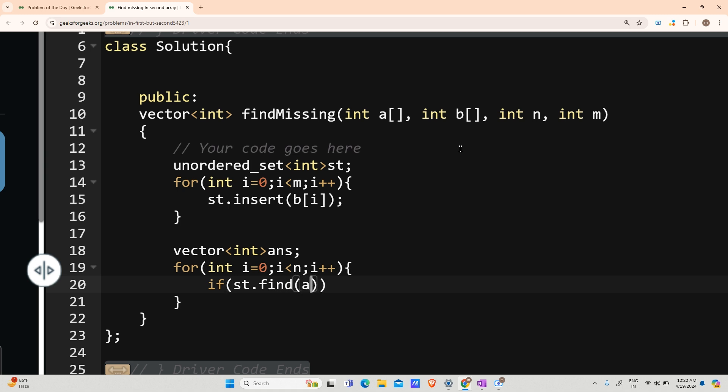For int i going from 0, i less than n, i++. If st.find(A[i]) equals st.end(), that is I'm trying to find element A[i] in the set of B elements and I didn't find any element named A[i] in the elements of B, in that case I will say answer.push_back(A[i]).